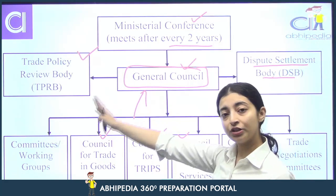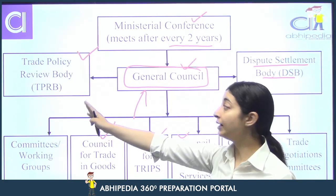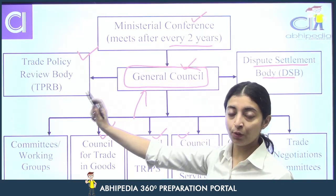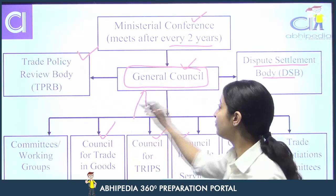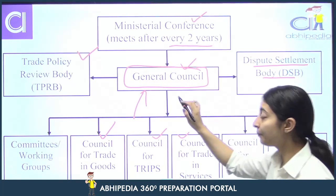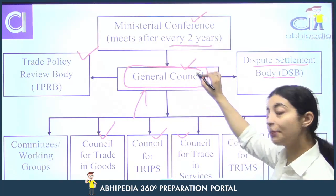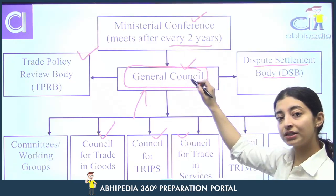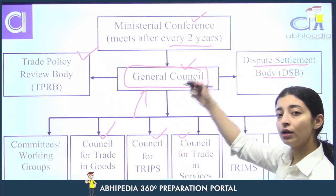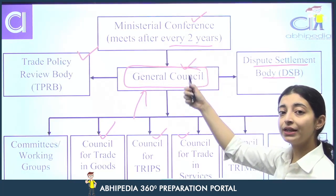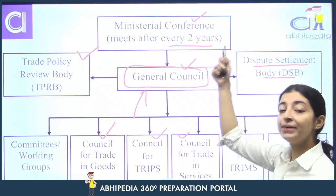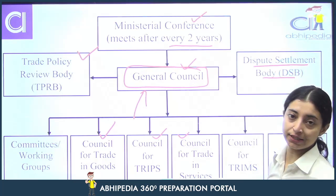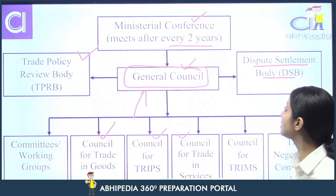Councils kya hain? Ye various segments hain jisme trade in various things ko humne divide kiya hai. For example, council for trade in services, council for trade in goods, council for trade in intellectual property. Ye different tarah ke trade ko focused approach se kaam karti hain, aur sab report karti hain general council ko. General council mein sab members ki representation hoti hai, regularly meet karti hai, aur ministerial conference ke behalf pe decisions bhi le sakti hai.